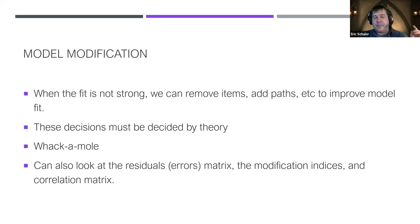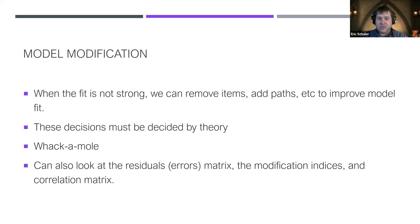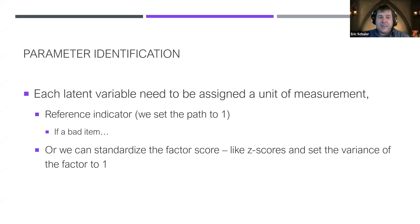For model modification, if we have a bad model we'd do what's called model trimming. This is where we leverage modification indices — looking at what items, if we change the paths or relationships, would improve model fit. We want to use that in conjunction with theory. If you're just using what the computer says, it becomes a game of whack-a-mole for the errors. Always let theory be your guide. Model parameter identification is also a requirement for CFAs.